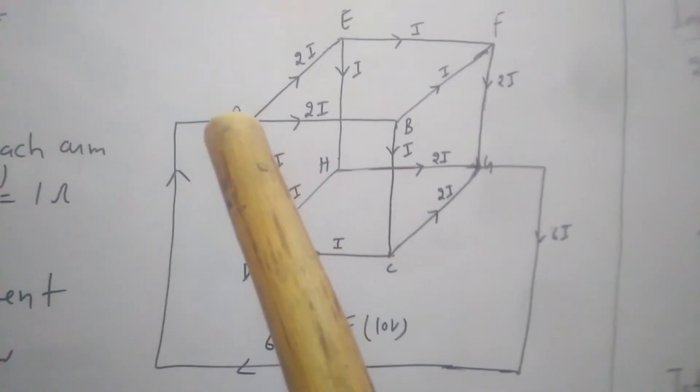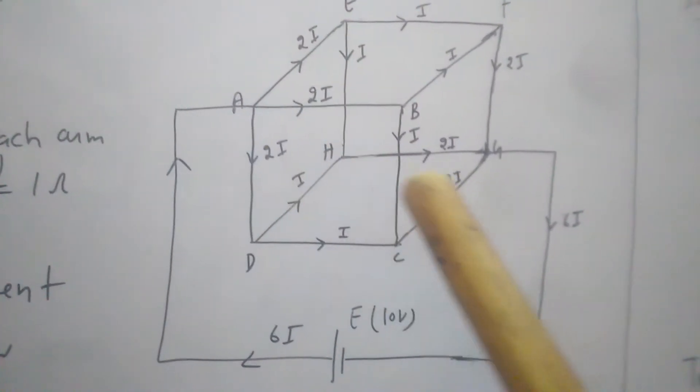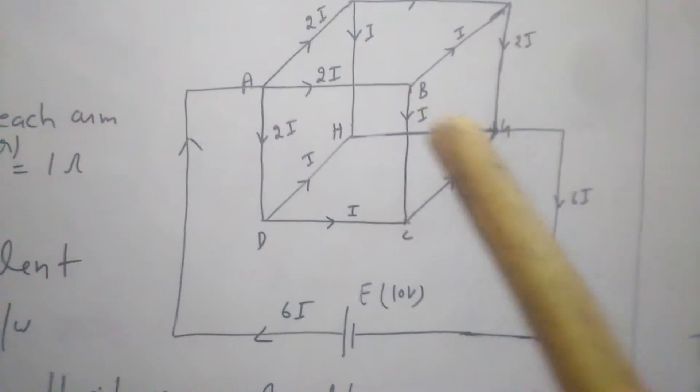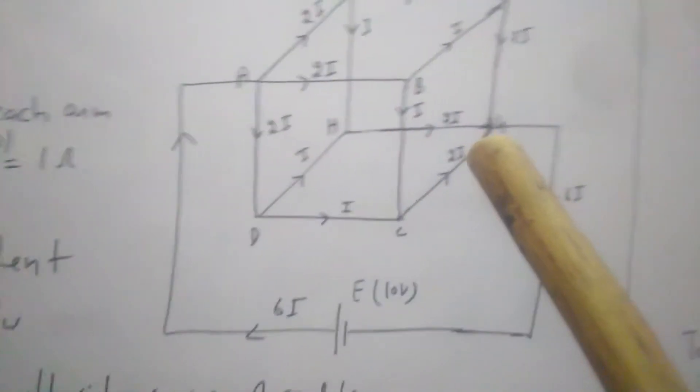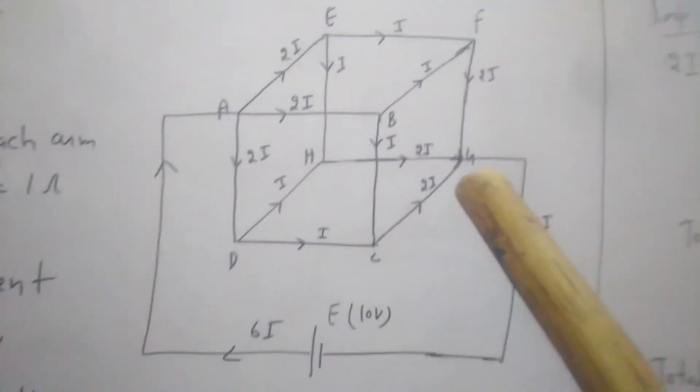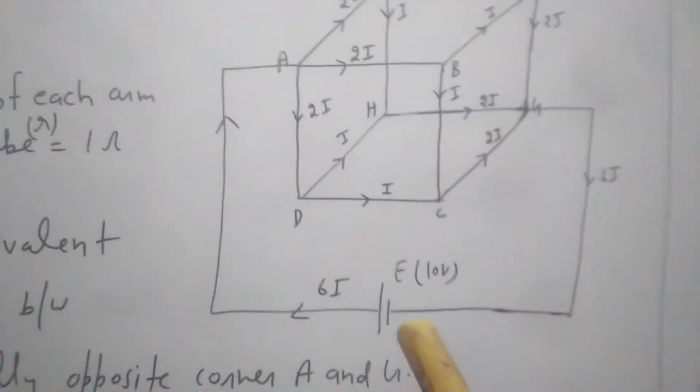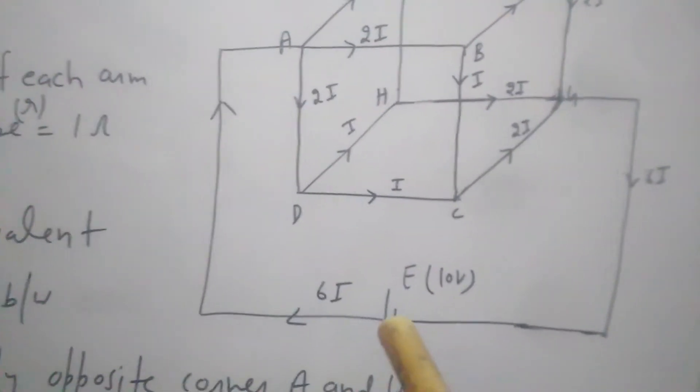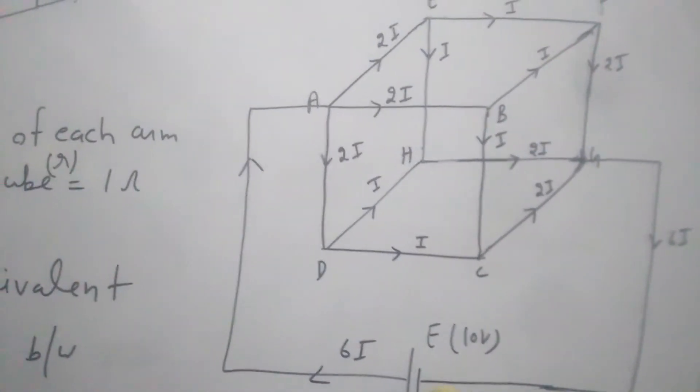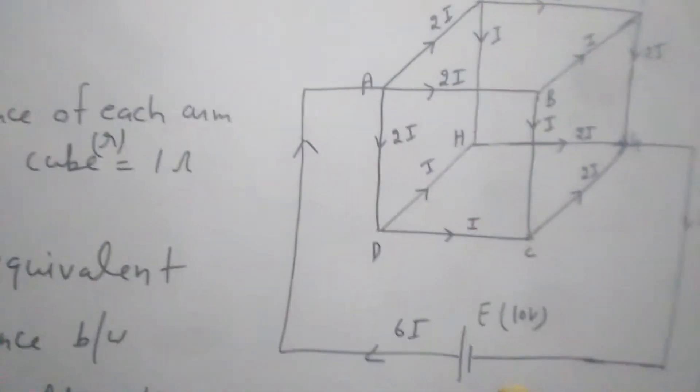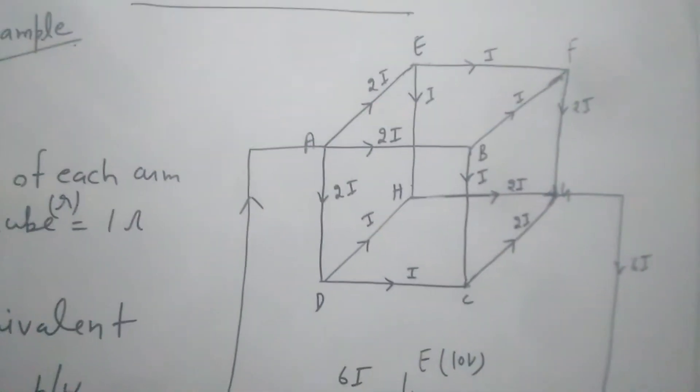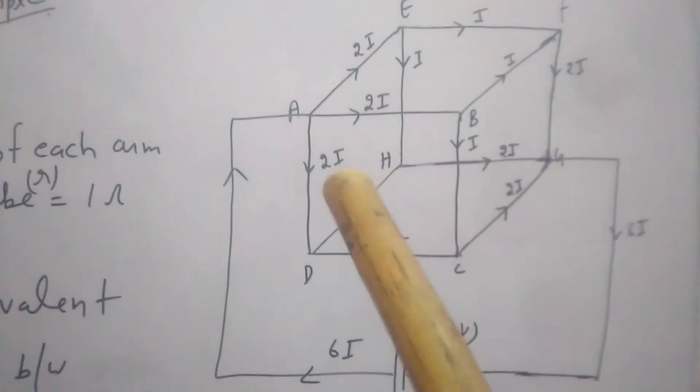This is a cube and you have to find equivalent resistance between this point A and diagonally opposite point G. A cell is given whose EMF is nearly 10 volt with negligible internal resistance. Now how we will solve this sum - this arrangement is given to you and you have to find equivalent resistance between A and G and total current that will flow through the circuit.